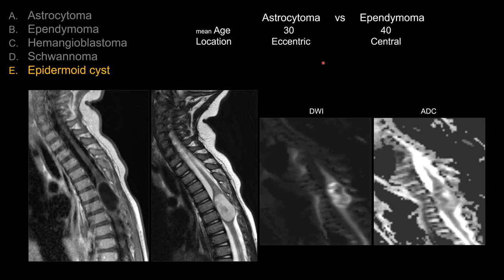If you see a lesion that's clearly more eccentric rather than central, go with astrocytoma. Remember, ependymoma is derived from the central canal, so it tends to be more centrally located. Also, if you see signs of hemorrhage — especially consistent with a cap sign, meaning hypointensity on T2 or GRE around the margin — or history of hemorrhage, go with ependymoma, as hemorrhage with astrocytoma is not that common.